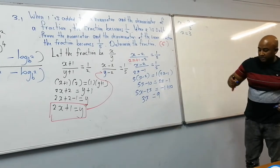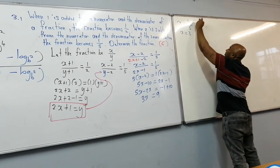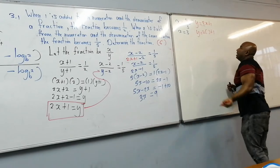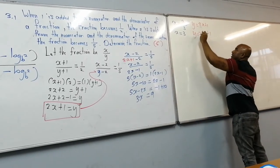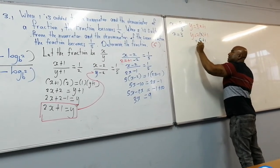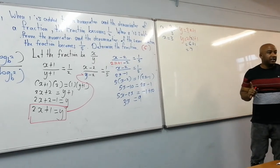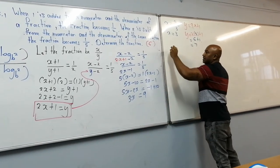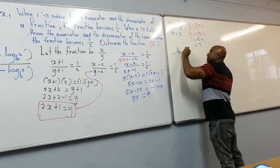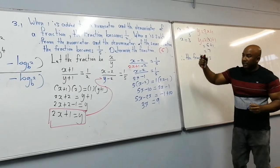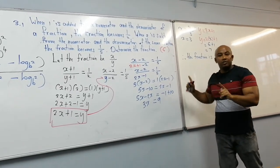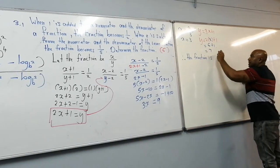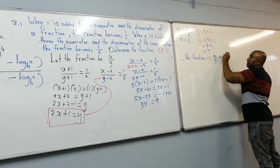Now find y: y equals 2x plus 1 equals 2 times 3 plus 1 equals 7. So we have x equals 3, y equals 7. The fraction is x over y, which is 3 over 7. Let's verify: adding 1 to numerator and denominator gives 4 over 8, which equals half. Correct!